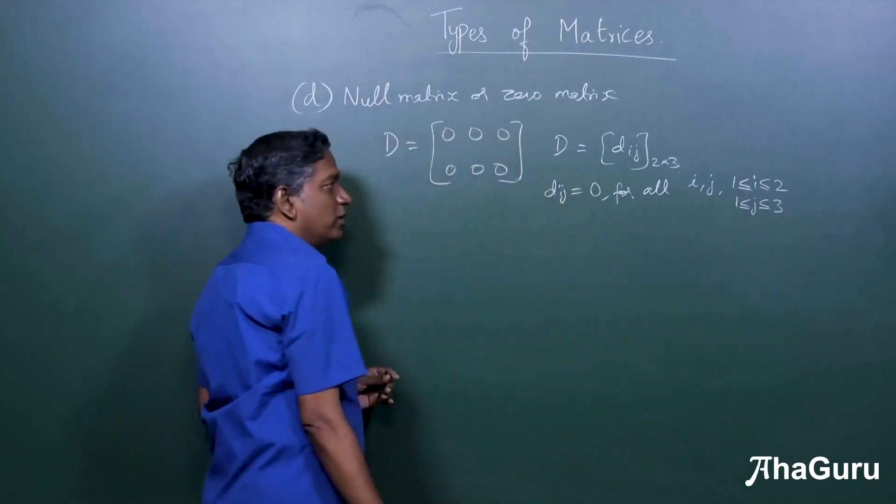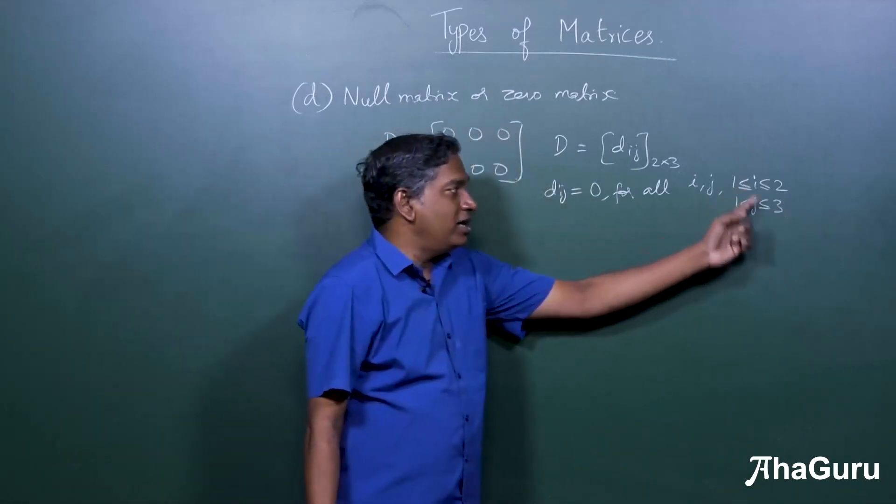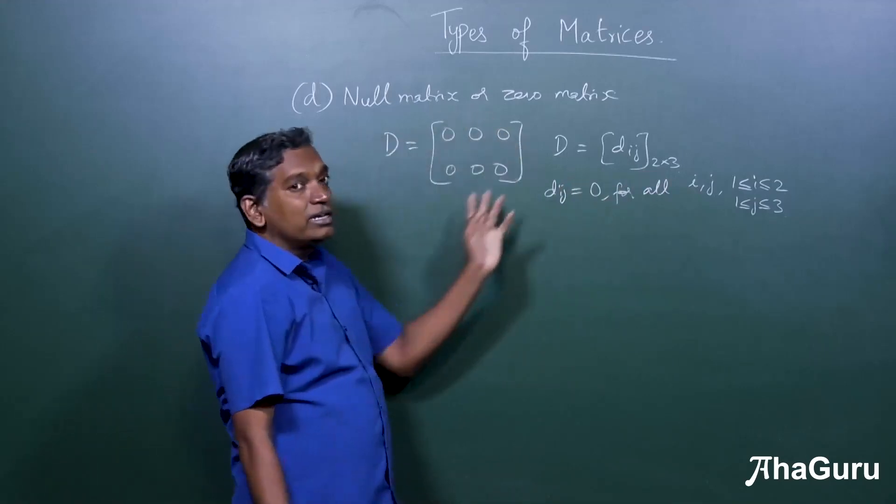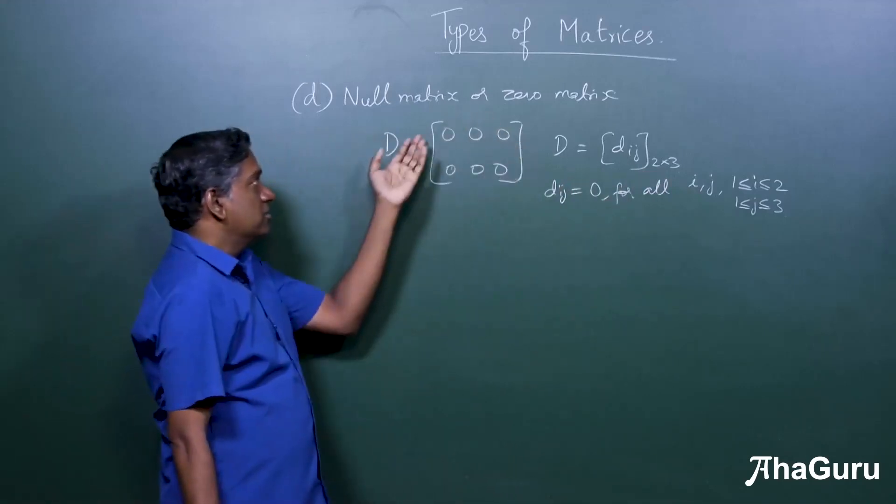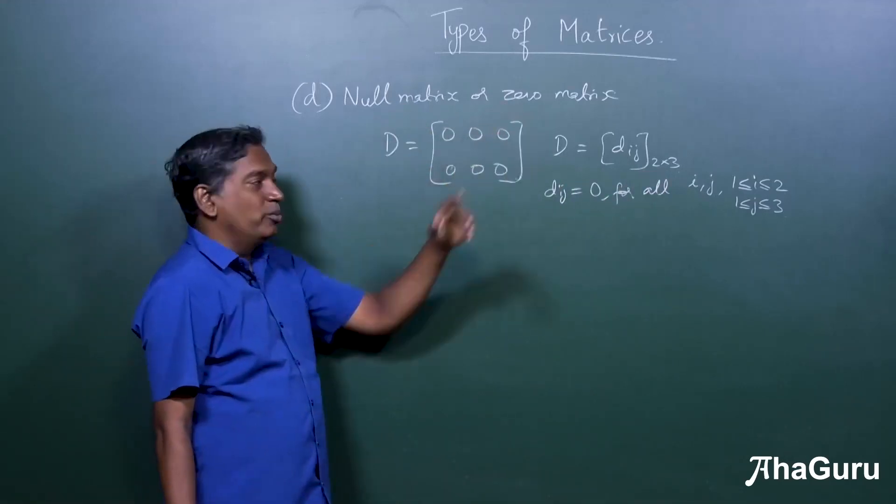Where i is between one to two, and j is between one to three. So for all such ij, Dij is zero because all the entries are zero.